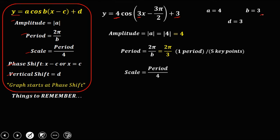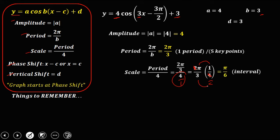For the scale, that's period over 4. The period is 2π/3, so that's (2π/3) divided by 4. Rewrite as 2π/3 times 1/4. Simplify — 2 and 4 are divisible by 2 — giving π times 1 over 3 times 2, so therefore the scale (interval) is π/6.